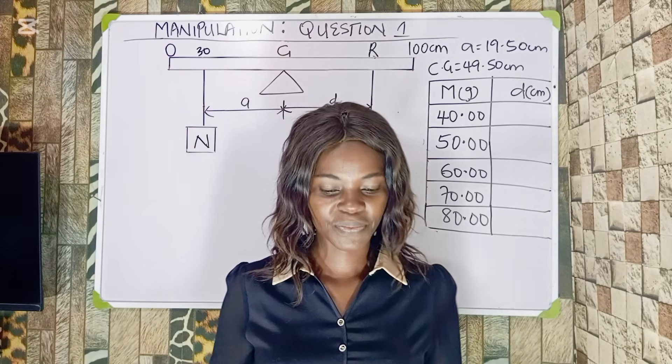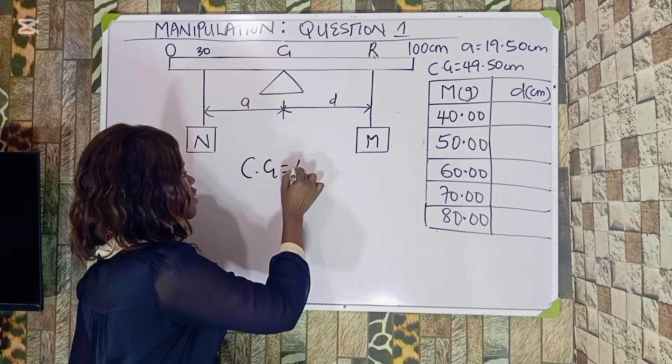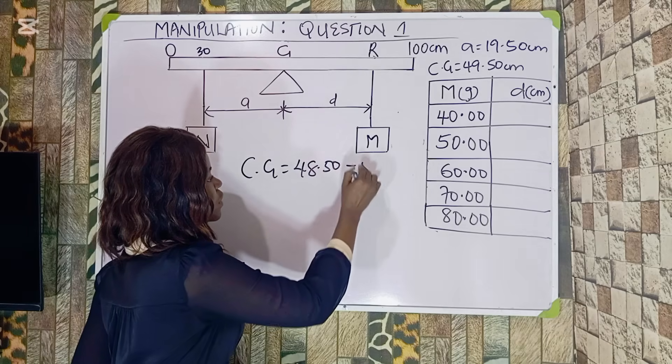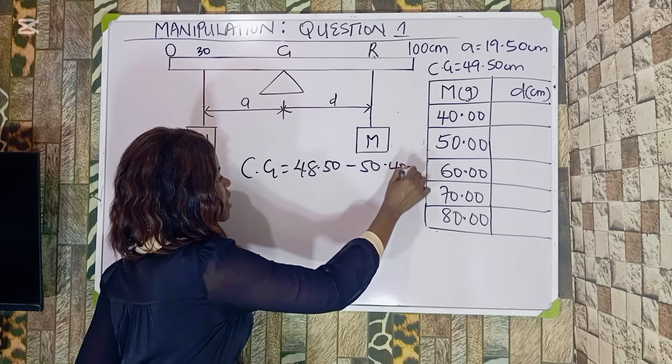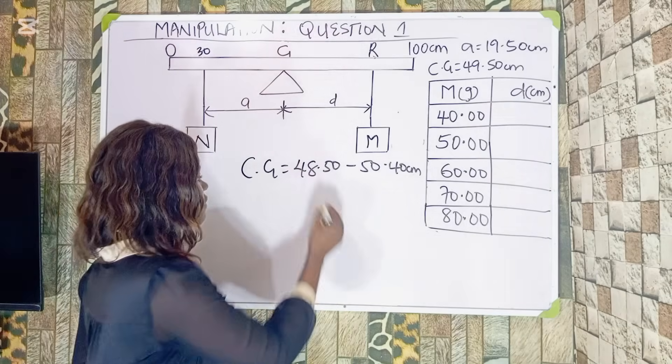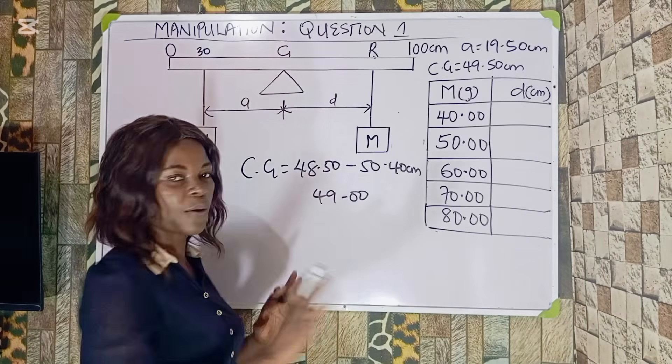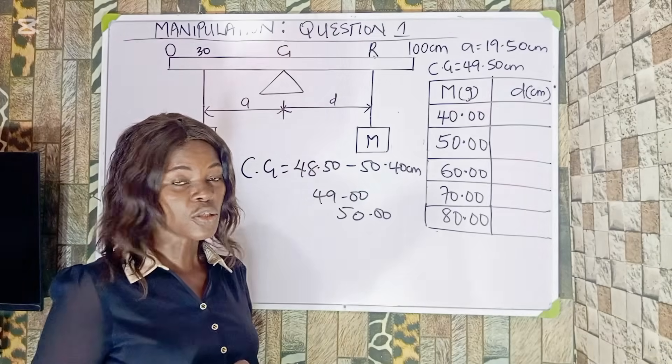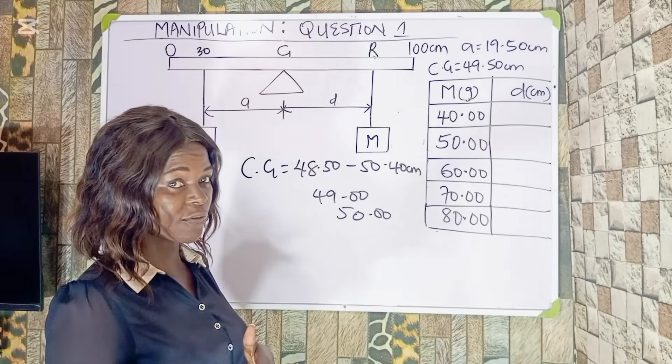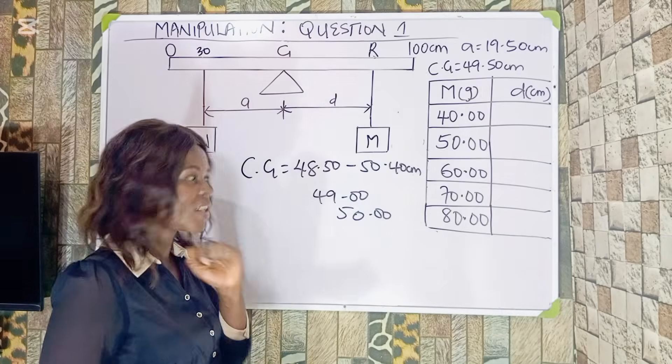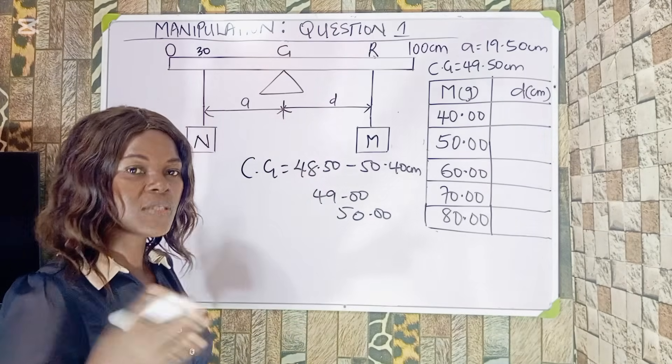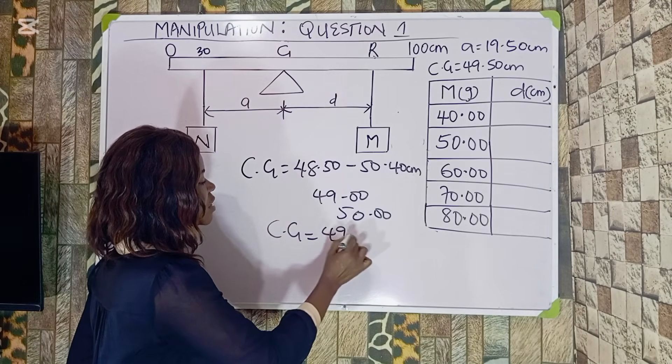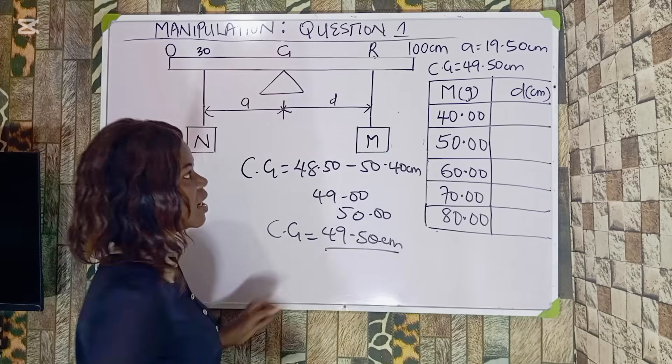So I'm going to give you the range of the CG that if you're within it, it will be accepted. The CG ranges from 48.50 to 50.40 centimeters. If you measure your own and it's giving you 49.00, you are correct. If you have 50.00, you are still correct because it is within this range. The examiner will use what you record to judge you. For the purpose of what I'm teaching today, I'm going to use a CG of 49.50 centimeters.